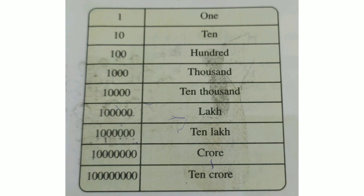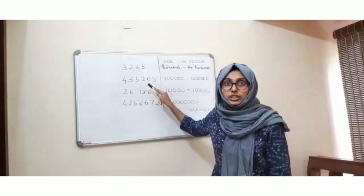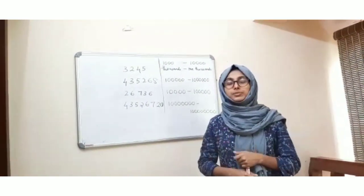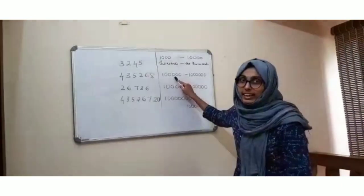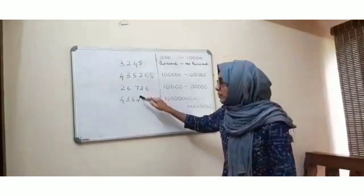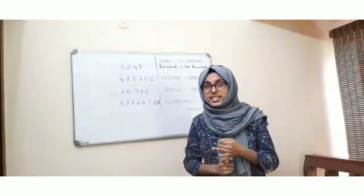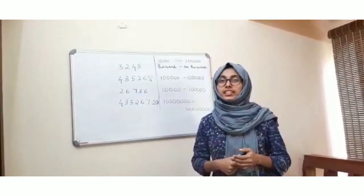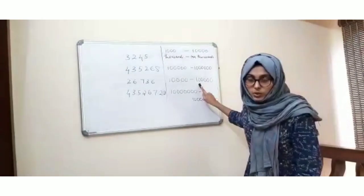So we will see some other numbers. This is 4,35,268. Now tell me, where will this number come? It will come between 1 lakh and 10 lakh. Another example: this is 26,736. Now tell me, where will this number come? This will come between 10,000 and 1 lakh.